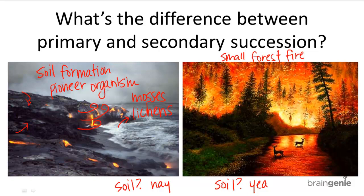Secondary succession doesn't have any pioneer organisms because there are already organisms within and around the soil that are residues from the old ecosystem. And depending on how much is left of the old ecosystem, secondary ecological succession can just start in the middle of succession and grow from there into the final climax community. So remember, the main difference between primary and secondary ecological succession is soil formation in primary ecological succession.